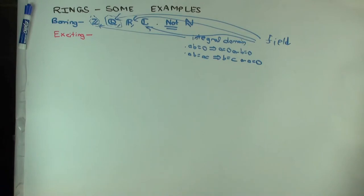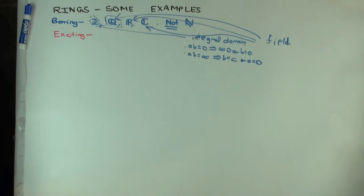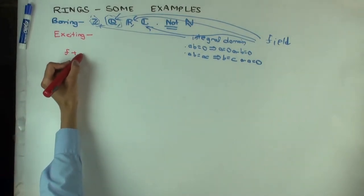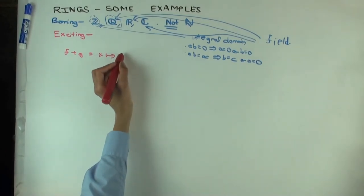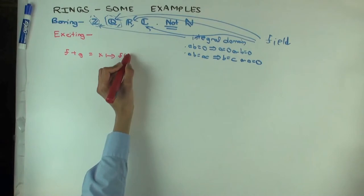So where do we look for new rings? Do we know how to add anything other than numbers? Calculus is the study of functions. Can you add functions? If they are on the same domain, you can. How do you define the sum of two functions? F plus g is the function which sends x to f(x) plus g(x) — pointwise addition.